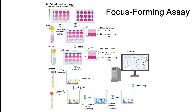For viruses that don't form plaques, the focus-forming assay is an alternative. This method uses virus-specific antibodies to detect clusters of infected cells, known as foci. By tagging antibodies with fluorescent markers or enzymes, we can visualize and count these foci to determine viral titers in focus-forming units per milliliter.